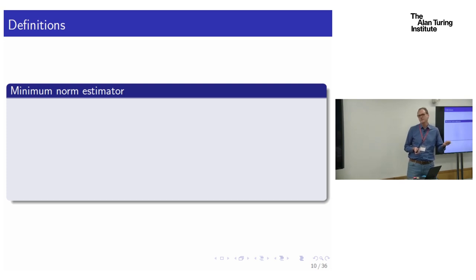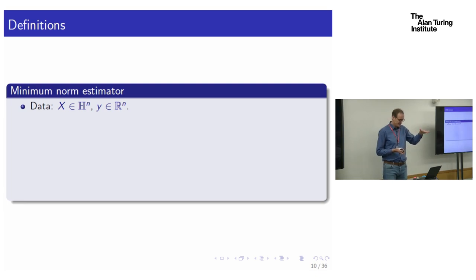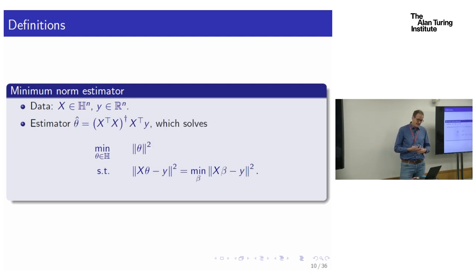We're interested in interpolating the training data. If we're in a high enough dimension to do that, there's a linear subspace of parameter space where we can interpolate. Out of that subspace, we pick the minimum norm estimate. Think of X as a matrix with N rows and Y as the vector of responses. Our estimator is the solution to the optimization: minimize the norm of theta subject to the training squared error being zero — we pick the minimum norm parameter vector that interpolates every point.